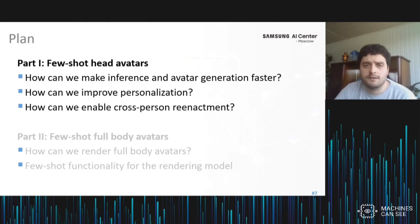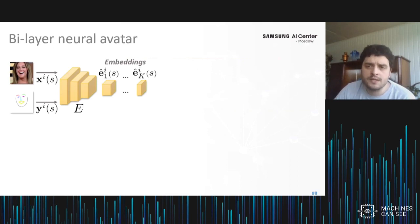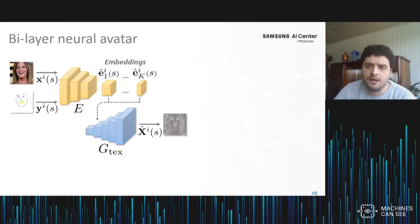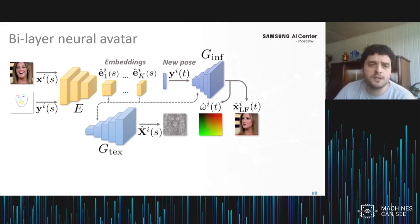Let me start with the new head avatar model, which increases speed and personalization. Our new model comprises multiple steps and has more components than the previous one. As before, we input the source image and its keypoints into the embedder network, and it produces a set of embeddings — in this case a bunch of tensors, higher-dimensional than before. We use these embeddings to predict the adaptive parameters of two generators: the texture generator, which is new, and the main generator used at inference time. The texture generator predicts a high-frequency texture containing personalized details, including areas not visible in the source image, allowing us to generate the person from new viewpoints.